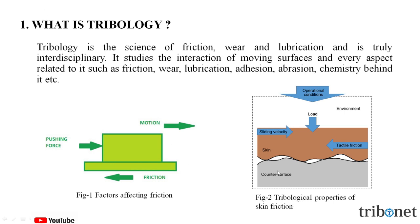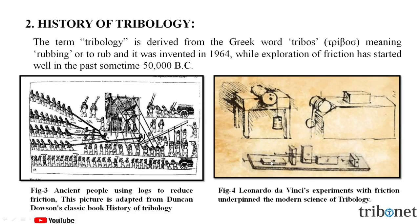In the second picture, you can see the tribological properties of skin friction, which comes under biotribology. Now let us know about the history of tribology. The term tribology is derived from the Greek word 'tribos' meaning rubbing or to rub. It was coined in 1964, while exploration of friction had started well in the past, sometime around 50,000 BC. In figure 3, we can see how ancient people used the knowledge of tribology while moving heavy sculptures by placing wooden logs underneath. In figure 4, we can see Leonardo da Vinci's experiment with friction, which underpinned the modern science of tribology. He is also called the first tribologist.